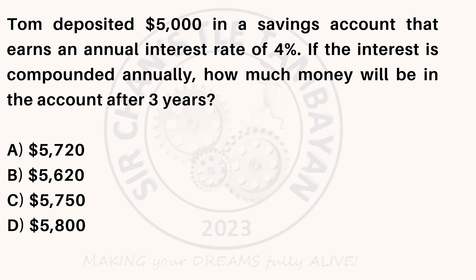Tom deposited $5,000 in a savings account that earns an annual interest rate of 4%. If the interest is compounded annually, how much money will be in the account after three years? A. $5,720. B. $5,620. C. $5,750. D. $5,800.